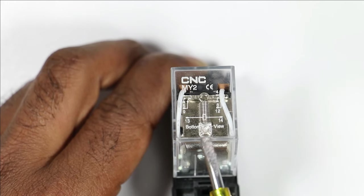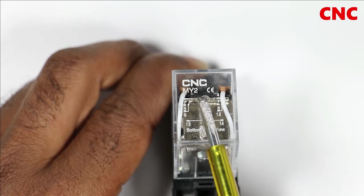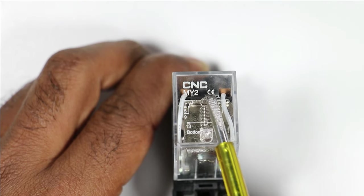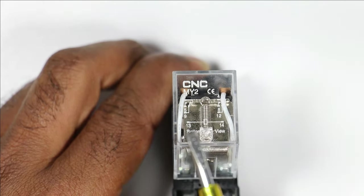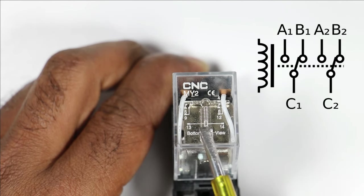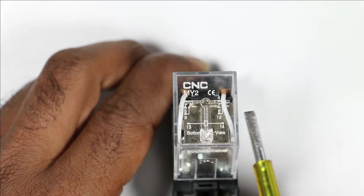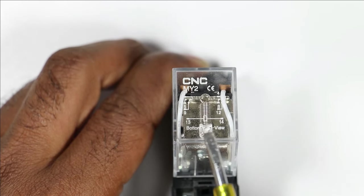This relay which I have now is manufactured by CNC company. You can see the model number here. At the last of model number 2 is written. This means 2NO and 2NC contacts are present inside. If 4 was written here, then 4NO and 4NC must be present.